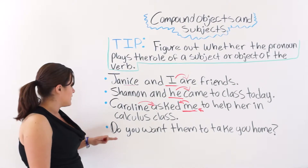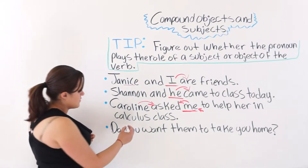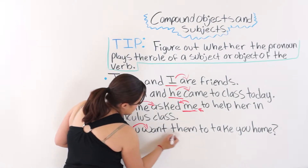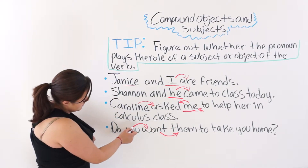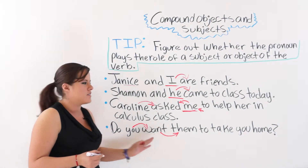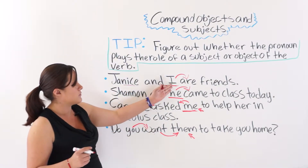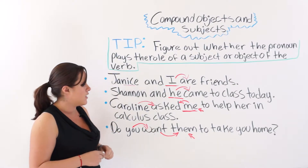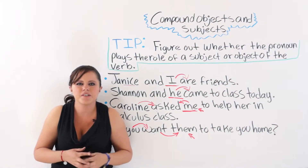The last one says 'Do you want them to take you home?' 'Them' is the subject of the verb 'take,' performing the action, and 'you' is the object of that verb, receiving the action. When a pronoun is the subject of the verb, we use a personal pronoun. When it is the object, we use the object pronoun.